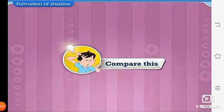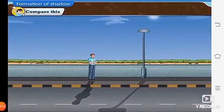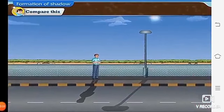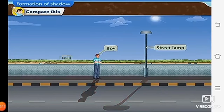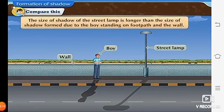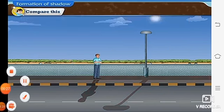Compare this. Compare the objects in your environment with the shadows they form. So, here we are having a boy standing on a footpath, street lamp and a wall behind it. The size of shadow of the street lamp is longer than the size of shadow formed due to the boy standing on footpath and the wall. Let us now perform one more activity to understand more about shadows.